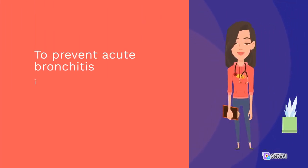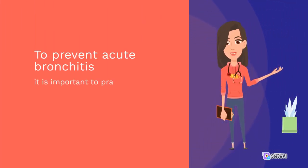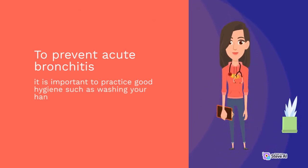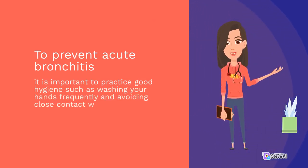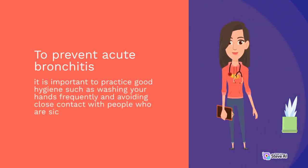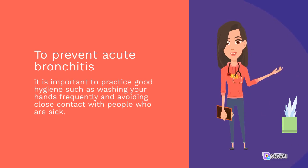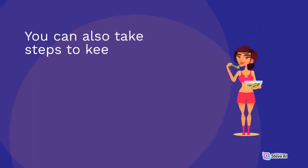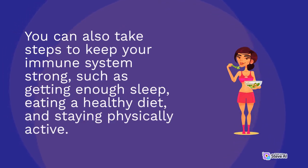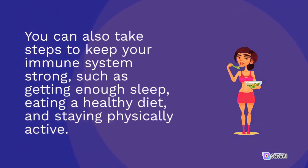To prevent acute bronchitis, it is important to practice good hygiene such as washing your hands frequently and avoiding close contact with people who are sick. You can also take steps to keep your immune system strong, such as getting enough sleep, eating a healthy diet, and staying physically active.